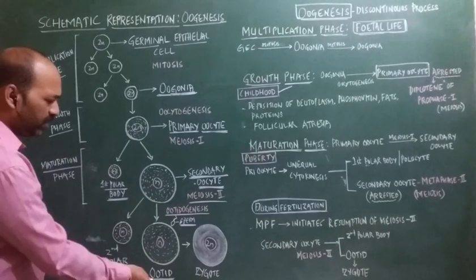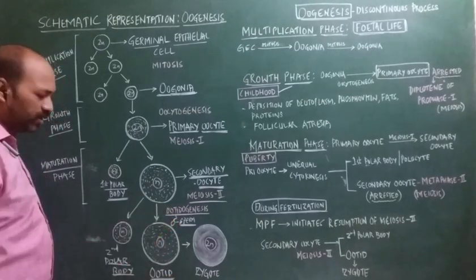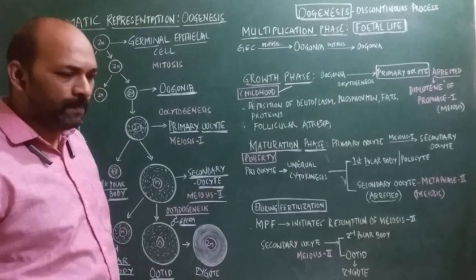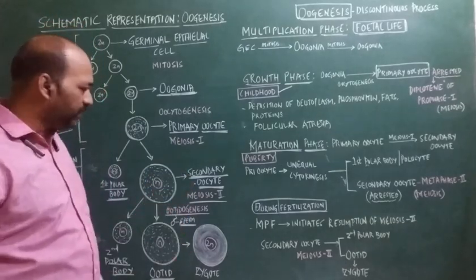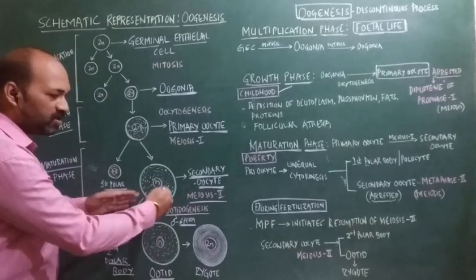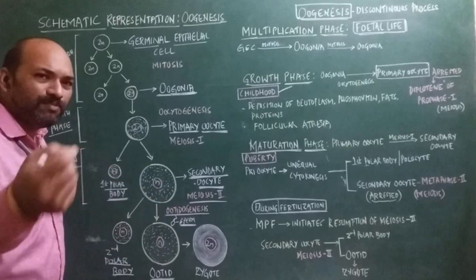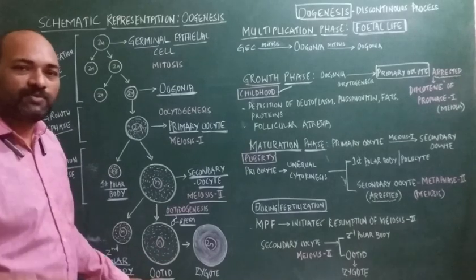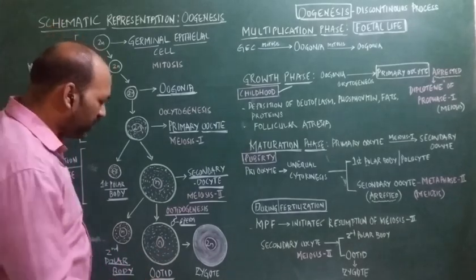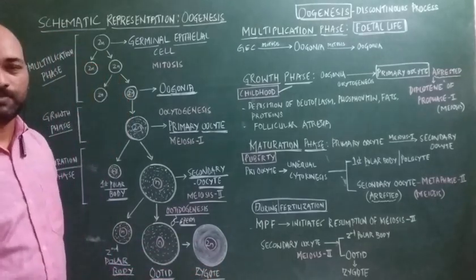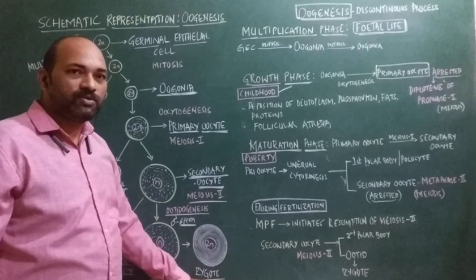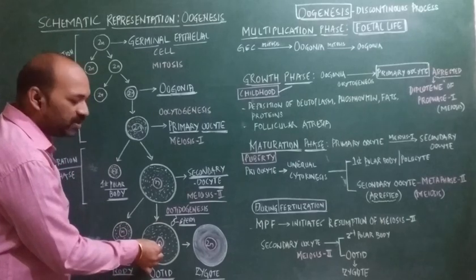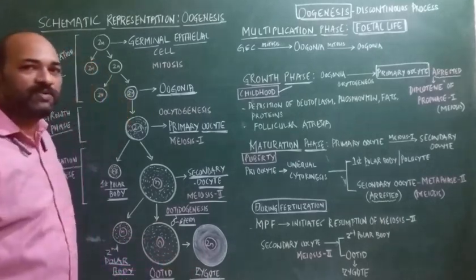The ootid is immature, and surrounding the zona pellucida of the ootid, the polar bodies are present. When the ootid gets converted into an ovum, as soon as the sperm enters the secondary oocyte, the secondary oocyte is converted into the ootid, and within minutes there is extrusion of the polar bodies. The ootid is then converted into the ovum, and within minutes the ovum is converted into the zygote, where the haploid set of male chromosomes fuses with the haploid set of female chromosomes.